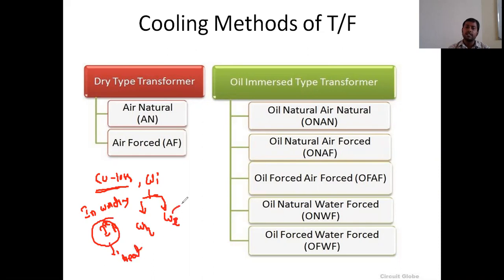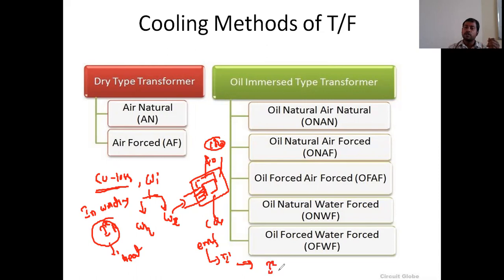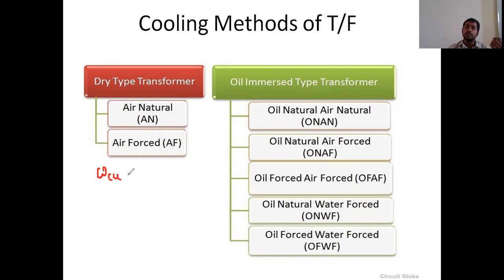Because of eddy current losses in the transformer core, whenever current flows through the primary winding, it establishes the flux — phi knot flux. Whenever this flux cuts the stationary core, an EMF is induced in the core. Because of this EMF, circulating currents flow through the core. When current flows through any conducting material, I²R losses are produced. So because of both copper losses and iron losses, heat will be produced.